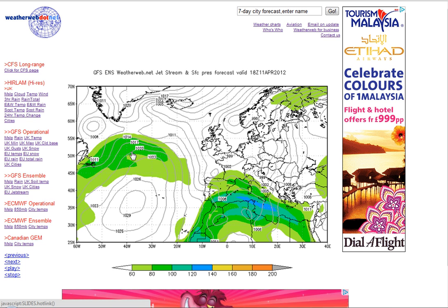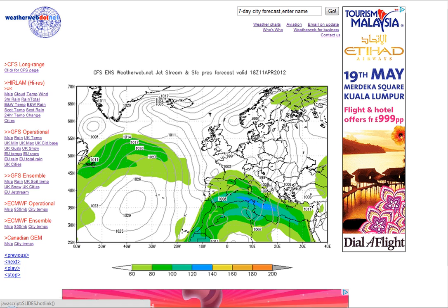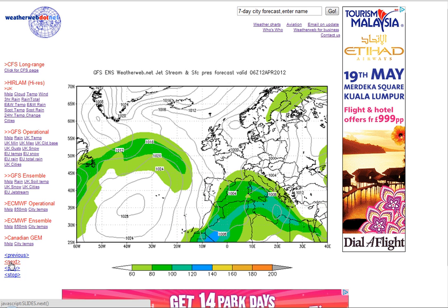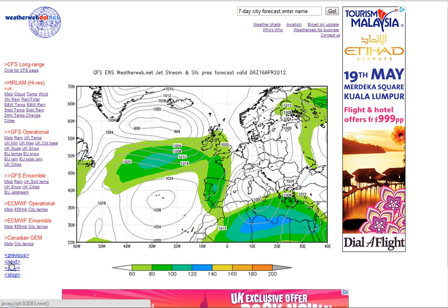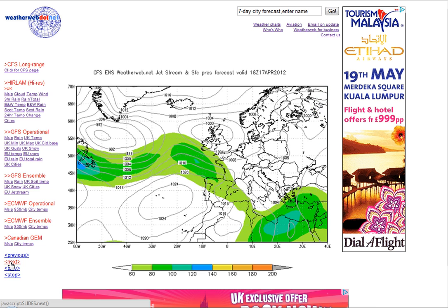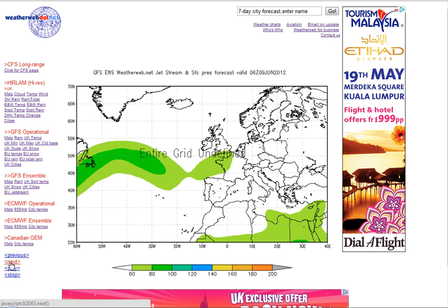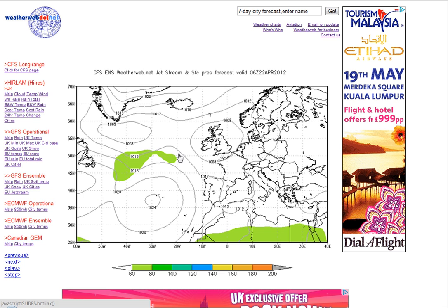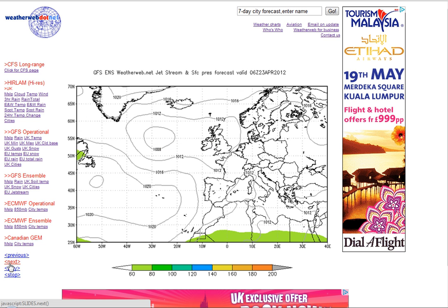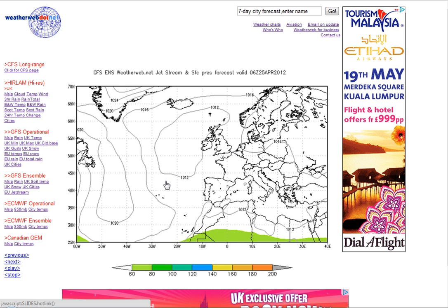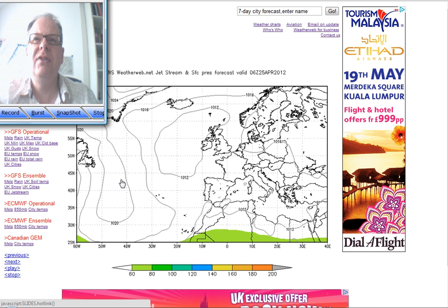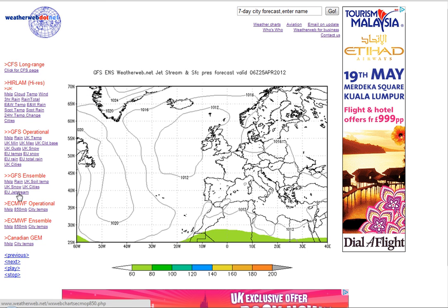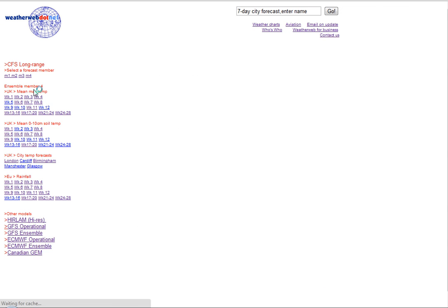I've clicked on the EU jet stream chart and this is where it is today, across the Atlantic and sinking into central parts of Europe through the Mediterranean. Stepping through in 12-hour increments, the jet stream is generally across the south of the country, and even into this weekend it stays down towards the south, though it is trying to edge a little further north. It weakens by the back end of the month, so we'll see a weaker effect from the jet stream later on, but the main feature is that it will remain close to the south of the country, meaning unsettled conditions are likely to continue.